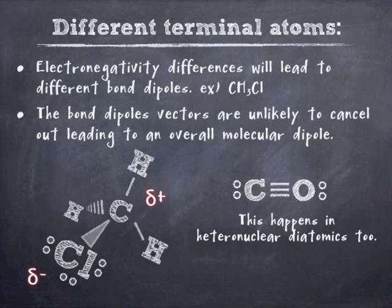And this can also happen in what are called heteronuclear diatomics. That means, obviously, two atoms of different types. And that should make sense, too, that if you have two different atoms, you're probably going to have an electronegativity difference. And hence, one side is going to be partially positive, and one side is going to be partially negative. For instance, carbon monoxide is considered a polar molecule.